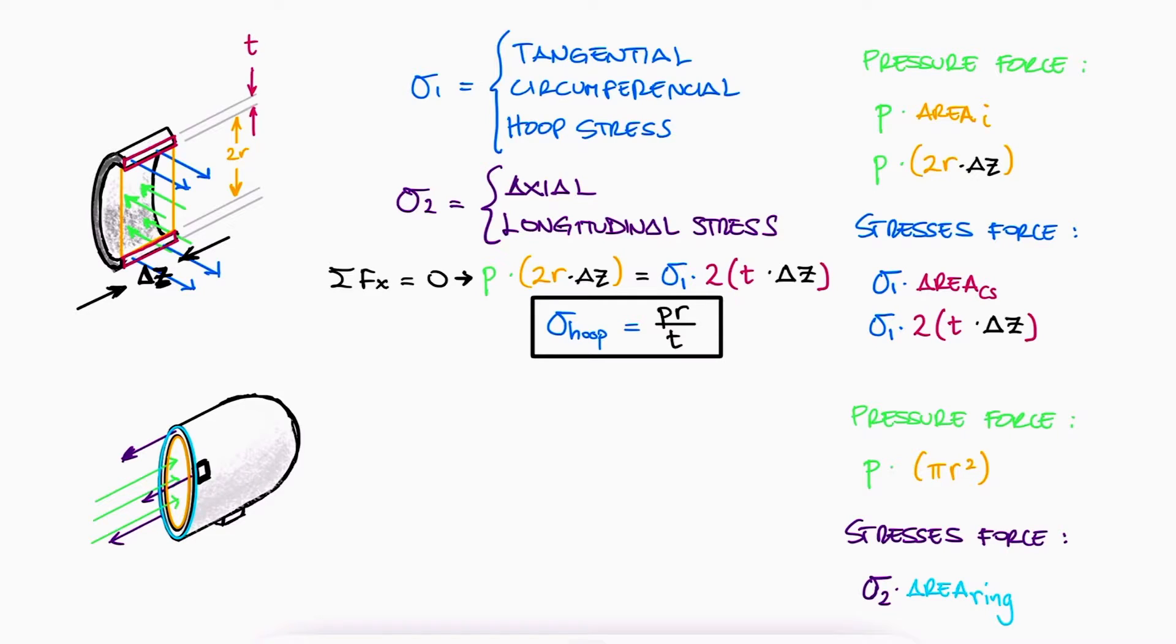Since the whole premise is that these are thin-walled vessels, meaning that the thickness t is small, the area of the ring will not be the outer circle minus the inner circle pi times outer radius squared minus inner radius squared, but just the circumference of the inner circle times the thickness t.